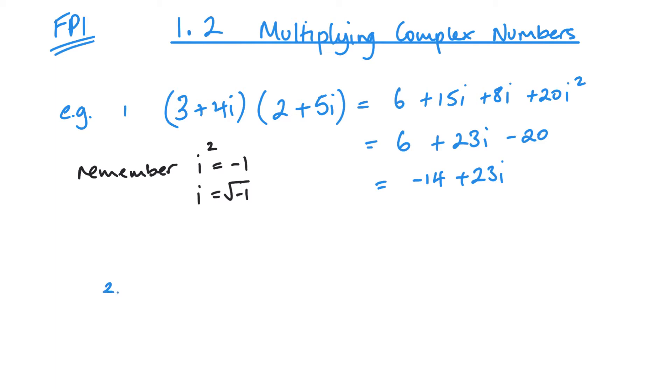I'll do a second example, slightly different. Let's go 2 minus 3i, and let's make this one squared. So same as two brackets, or I can take the shortcut, you know what it is.